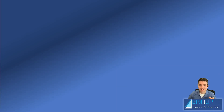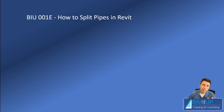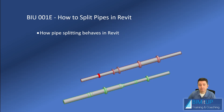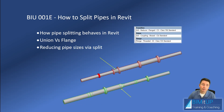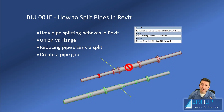Hi everyone, Alex here. Today I'm going to show you how to split pipes in Revit MEP. First we're going to look at how splitting pipes behave in Revit. I'm going to show you the difference between unions and flanges, which one takes precedence and how it behaves. We're also going to do some reducing of pipes using the split option, and finally we're going to create a pipe gap so you can remove a piece of pipe whenever you want.